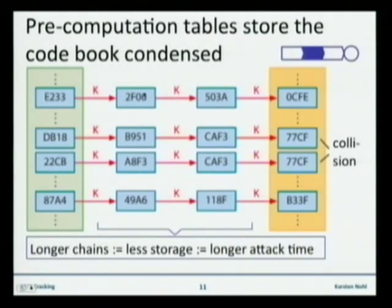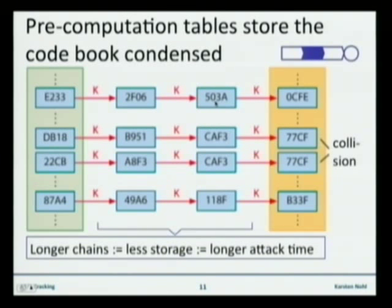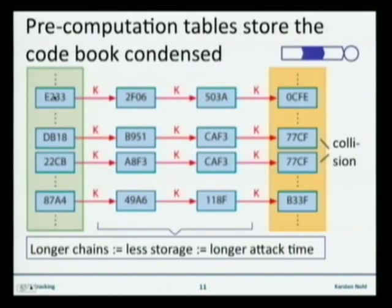What we're doing is applying the k function — A5.1 — over and over again until we hit a value in the yellow column. So in this case we would apply it once, look up: is 503a on hard disk in the yellow column? No. Do it once more and we find a value that is in fact on hard disk. We then go back to the green value corresponding to it and from there find the key that went into computing it, because it's in the same chain.